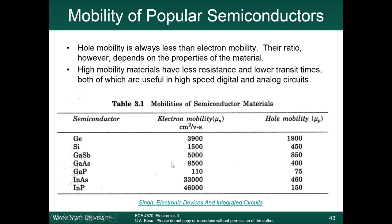Of these materials, gallium arsenide has a much higher mobility than silicon does for electrons, but for holes the mobility is roughly the same. There are other materials like indium phosphide and indium arsenide that have very high mobilities, and newer materials like graphene have an even higher mobility — I believe greater than 100,000. The higher the mobility of the semiconductor, the less resistance it will have, because conductivity is proportional to the mobility. We'll touch on that again later in this lecture.